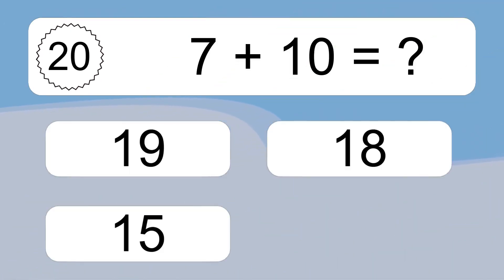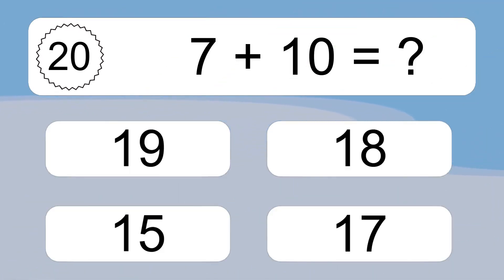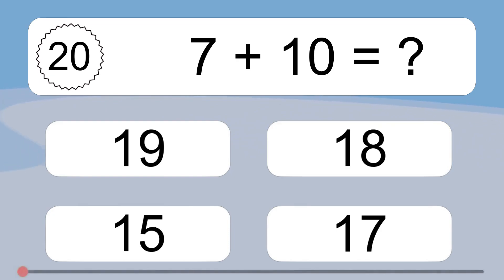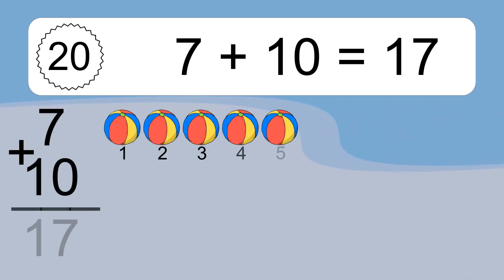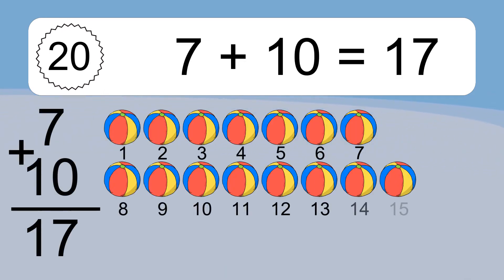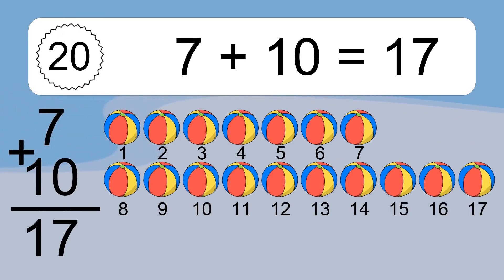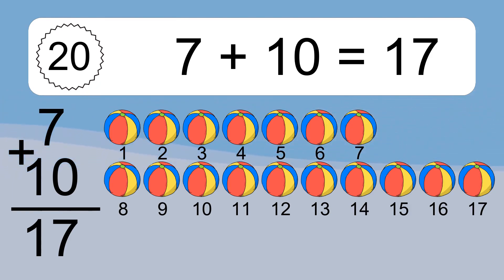7 plus 10 equals what? 7 plus 10 equals 17. Let's count it: 1, 2, 3, 4, 5, 6, 7, 8, 9, 10, 11, 12, 13, 14, 15, 16, 17.